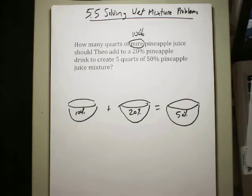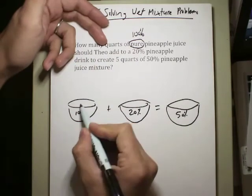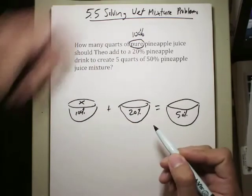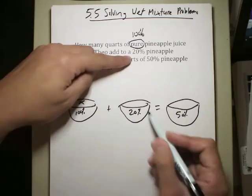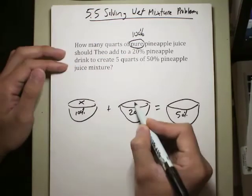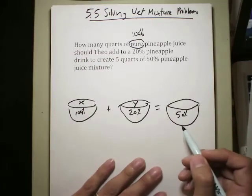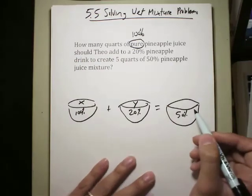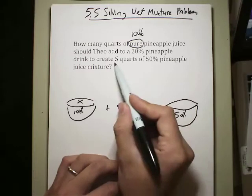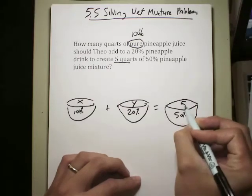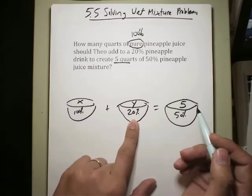Right here it says how many quarts of pure pineapple because I don't know how many. I can just start with a variable. So X represents the 100% or the pure kind. And I don't know how many I need for my 20% kind either so I can use another variable for it. Let's call that Y. And in the last bowl right here, of course I want to create a total of 5 quarts. So I know that this last bowl will contain 5 quarts of the 100% kind and the 20% kind.